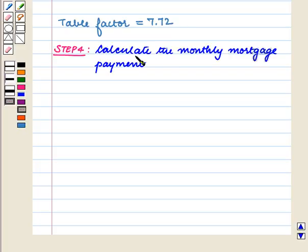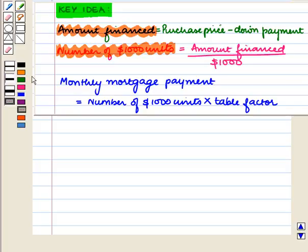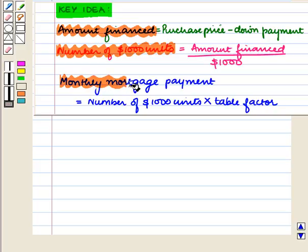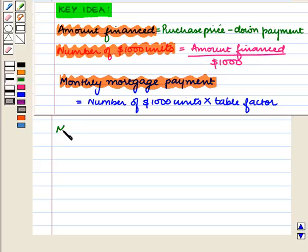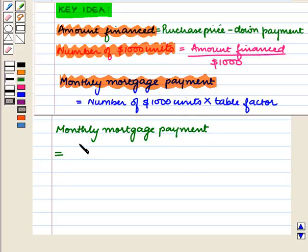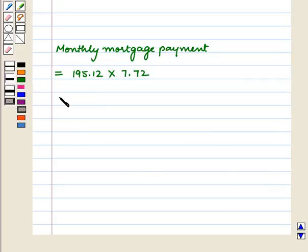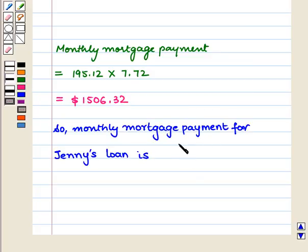Our last step is to calculate the monthly mortgage payment. Monthly mortgage payment equals number of $1,000 units multiplied by the table factor. So here, monthly mortgage payment equals 195.12 × 7.72, which equals $1,506.32. The monthly mortgage payment for Jenny's loan is $1,506.32, which is our required answer.